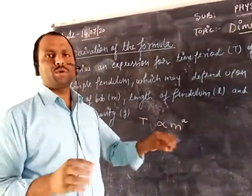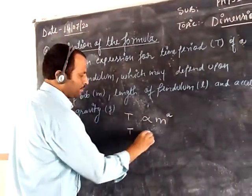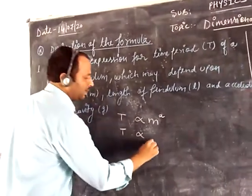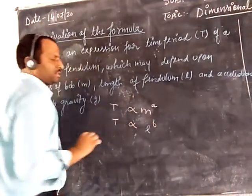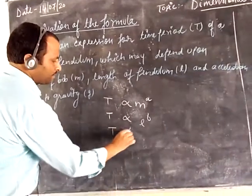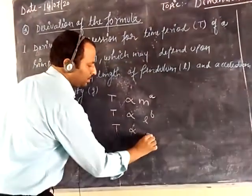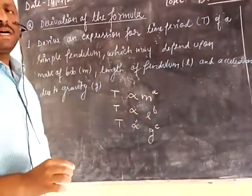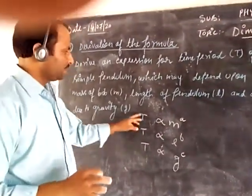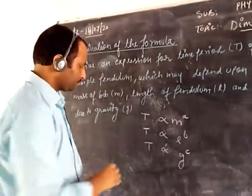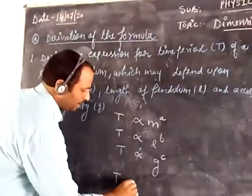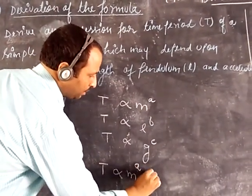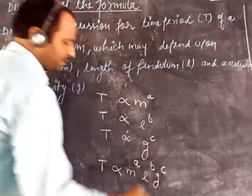Let us suppose there is a constant k. The time period of the simple pendulum also depends upon the length l, and depends upon the acceleration due to gravity. Let a, b, and c be some constants. So we will combine all three and write: time period depends upon m to the power a, l to the power b, and g to the power c.